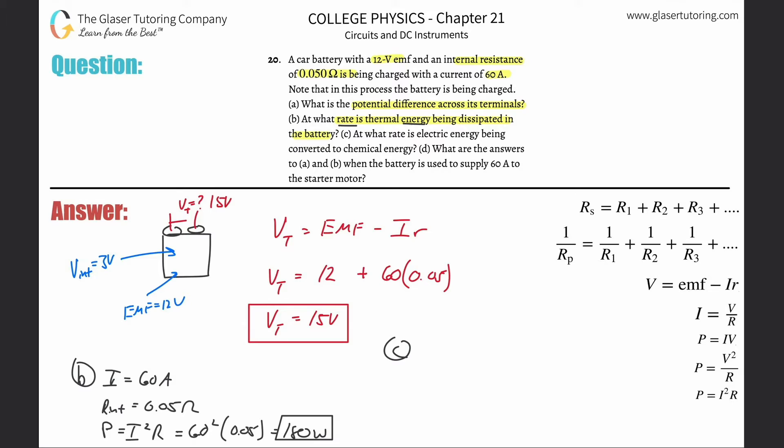Let us see. So at what rate is electrical energy being converted to chemical energy? So again, rate. So they're talking about power. Now what we have to consider here is we want to consider now at what rate is the electrical energy being converted into chemical energy? So in other words, what we have to do is we have to look at now from the perspective of what is the potential needed to charge the battery? So that potential needed to charge the battery is going to be the EMF of the battery.